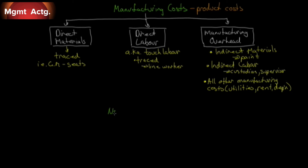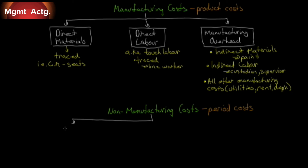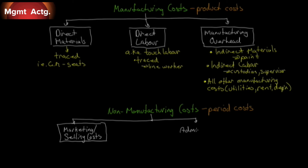Now let's move on to non-manufacturing costs. You're probably more familiar with these. Non-manufacturing costs are what we call period costs, as opposed to manufacturing costs, which are product costs. They're period costs because they don't go into a product — they go right onto the income statement in the period in which they're incurred. There are two broad categories: marketing or selling costs — the costs involved in selling or marketing finished goods — and administrative costs, covering the CEO, executives, accounting department, IT department, anything that's not in the factory.